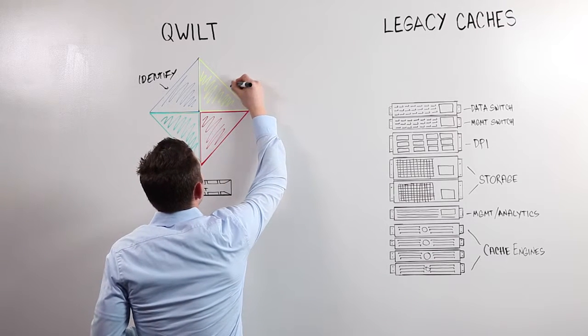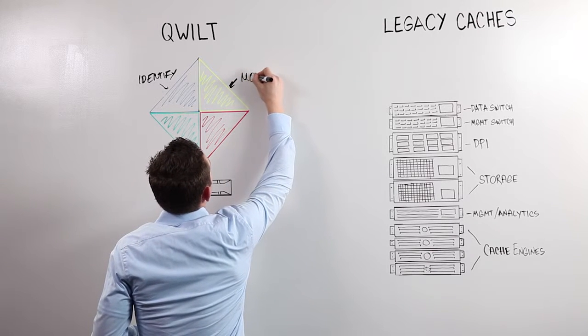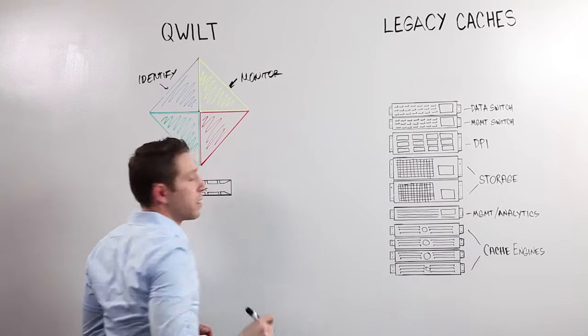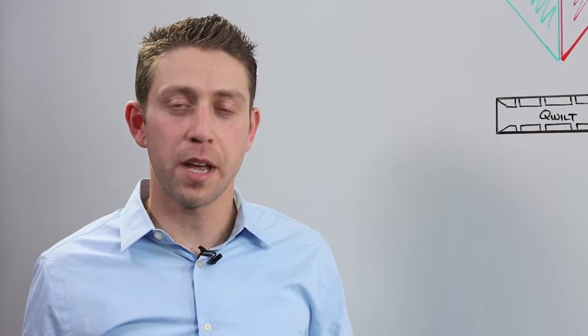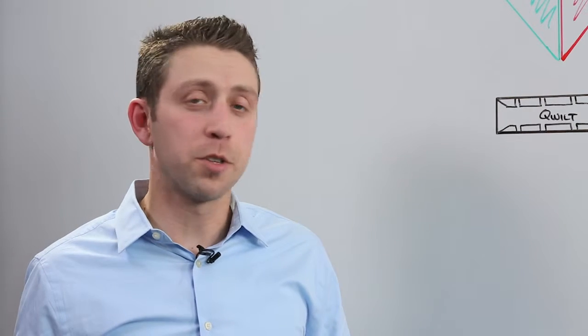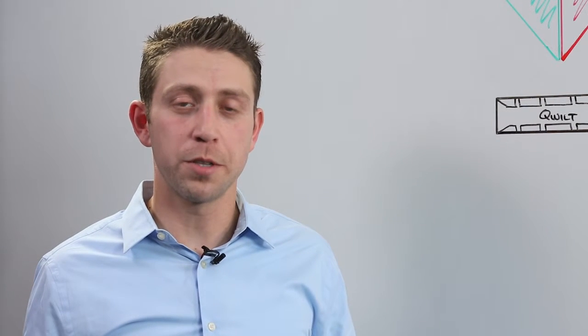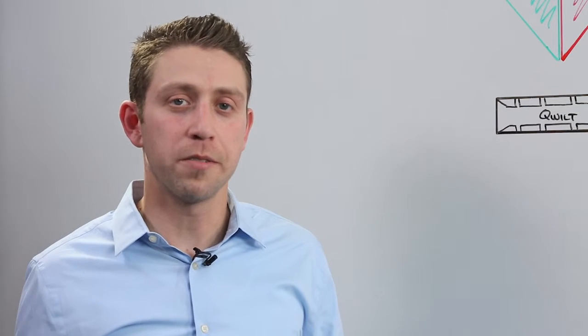The next step is to monitor the network traffic for redundant content. Quas features a proprietary byte efficiency calculation algorithm that determines which content will produce the highest caching efficiency when it's stored on the device.